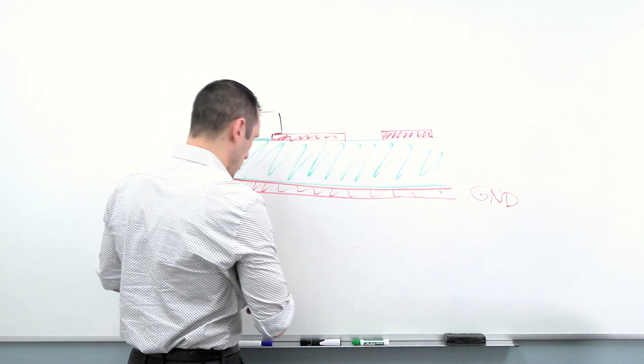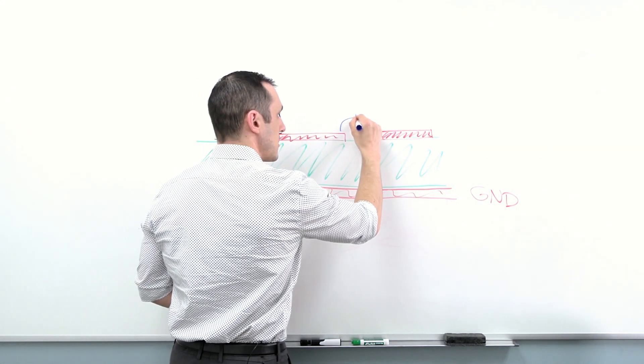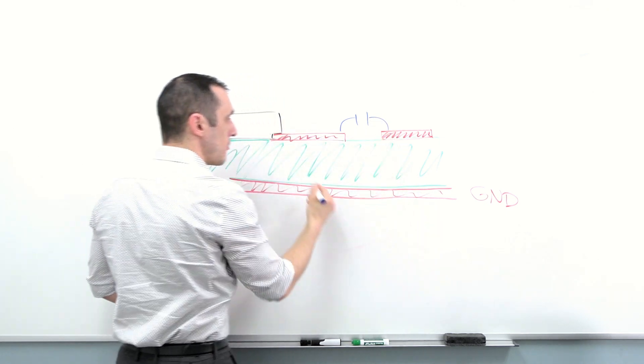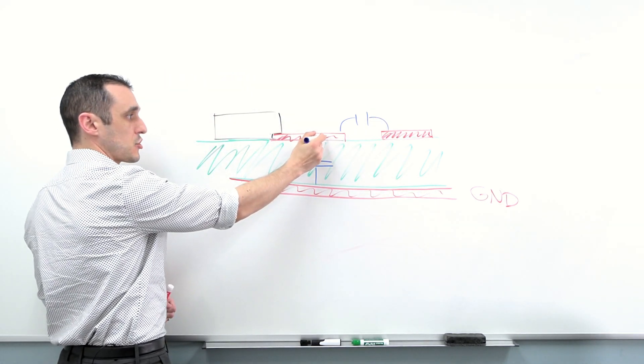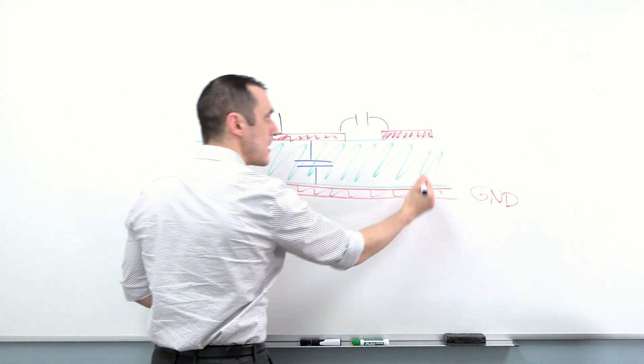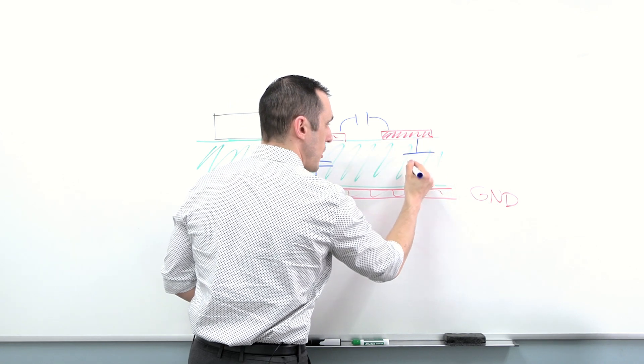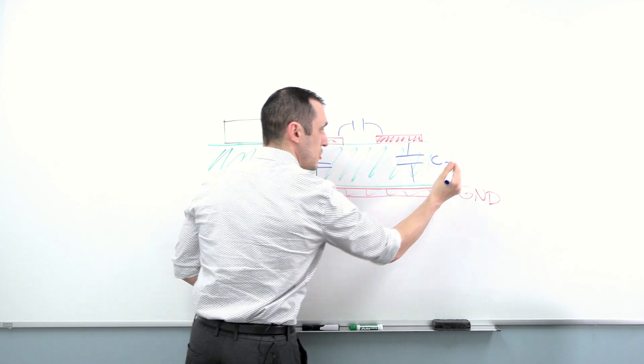So between these two sections of trace, there is some capacitance here, but there's also some capacitance here. This trace itself has some capacitance with respect to ground. Same thing here. This trace also has some capacitance with respect to ground. So we can call this C1 and we can call this C2.